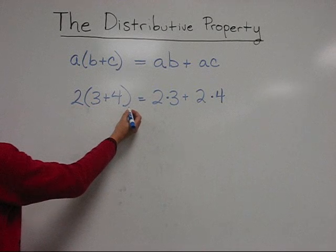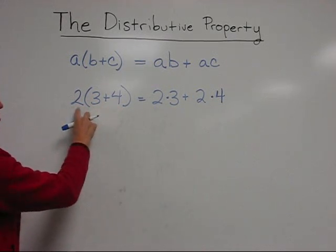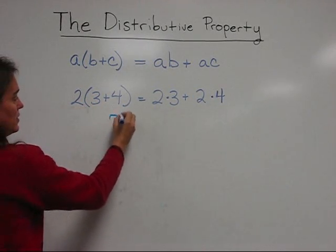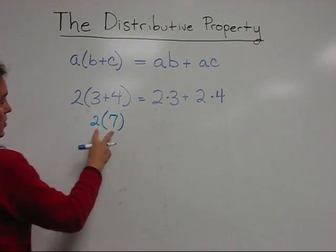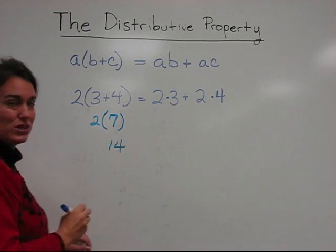The order of operations tells us that we need to do what's in parentheses before we multiply. So here we get 2 times 7, which is 14.